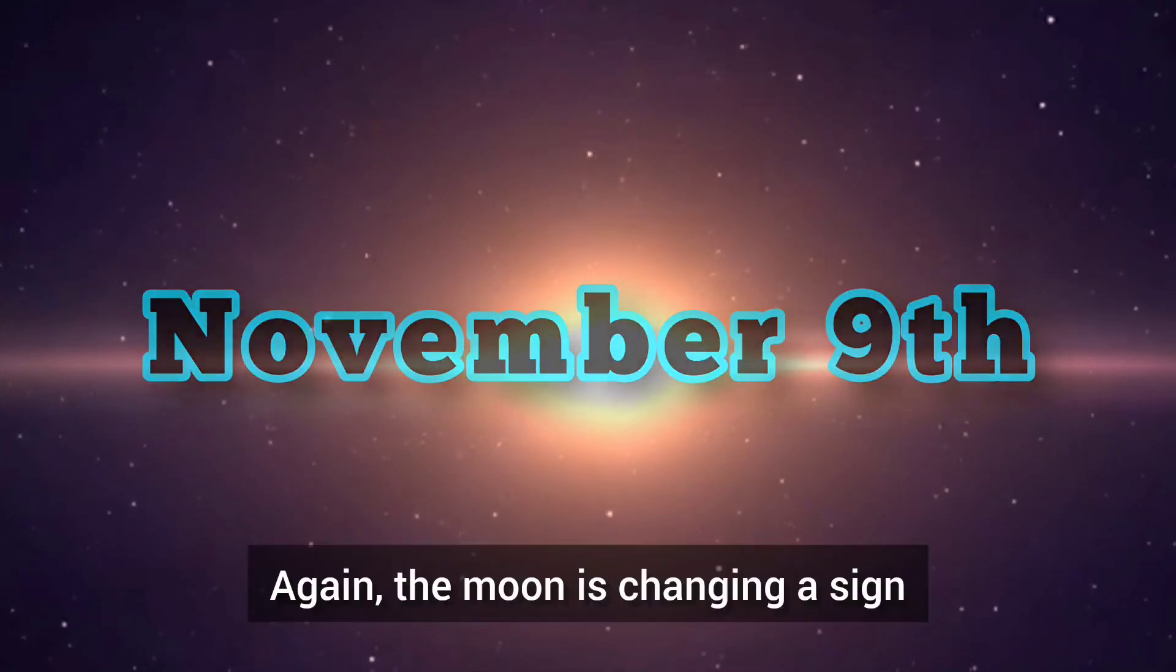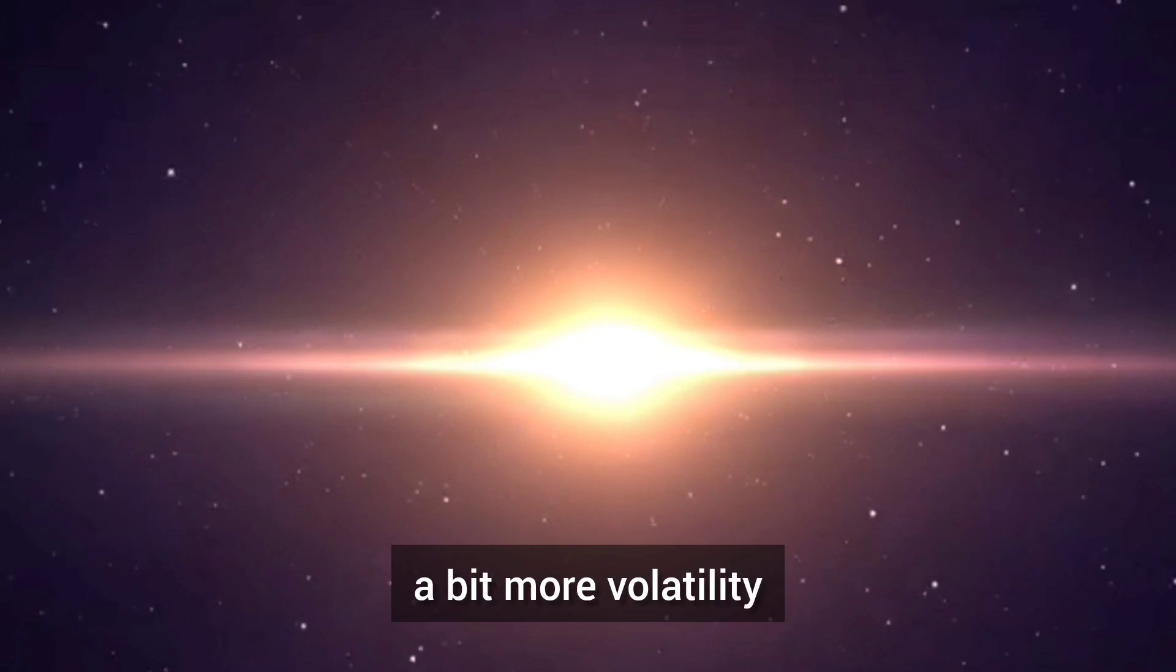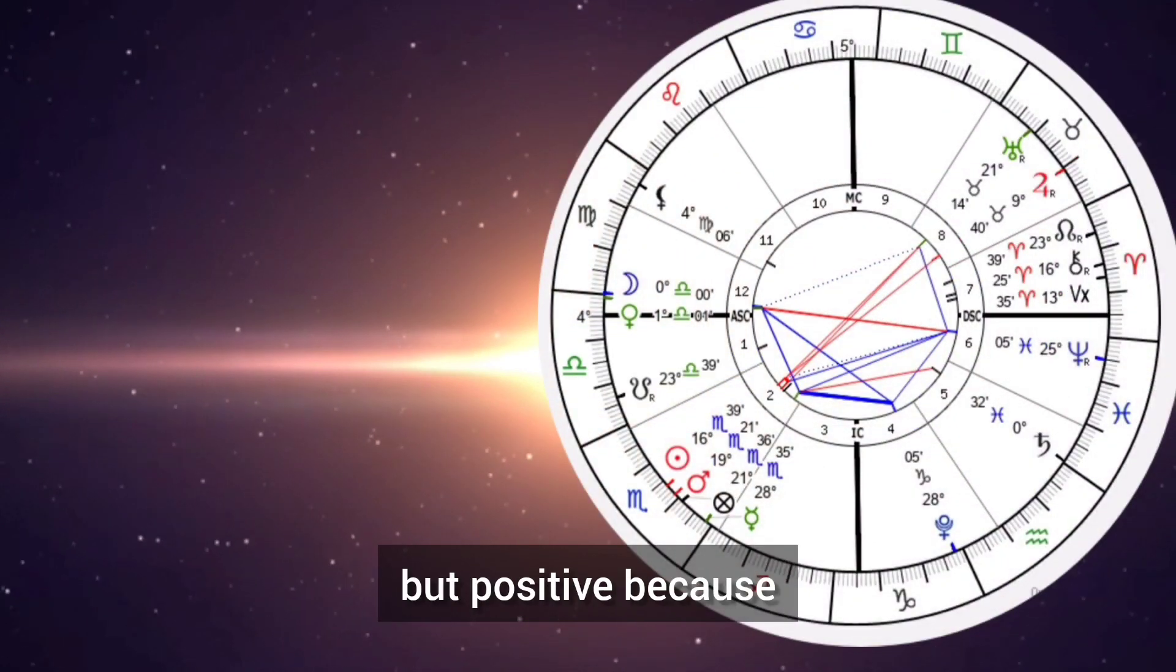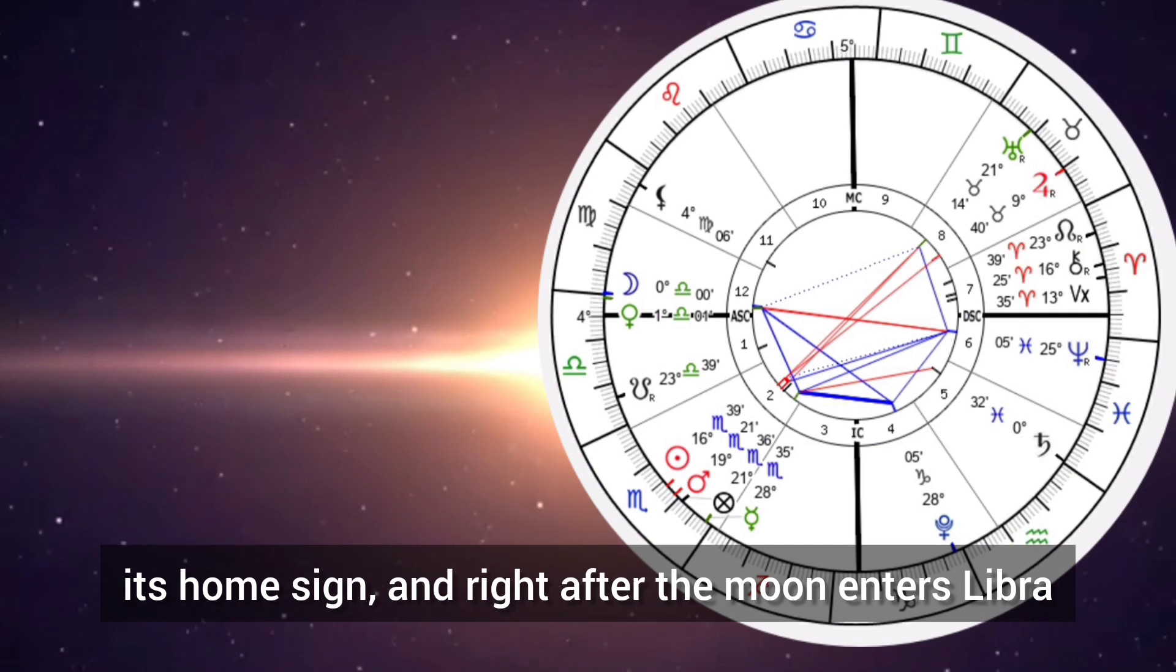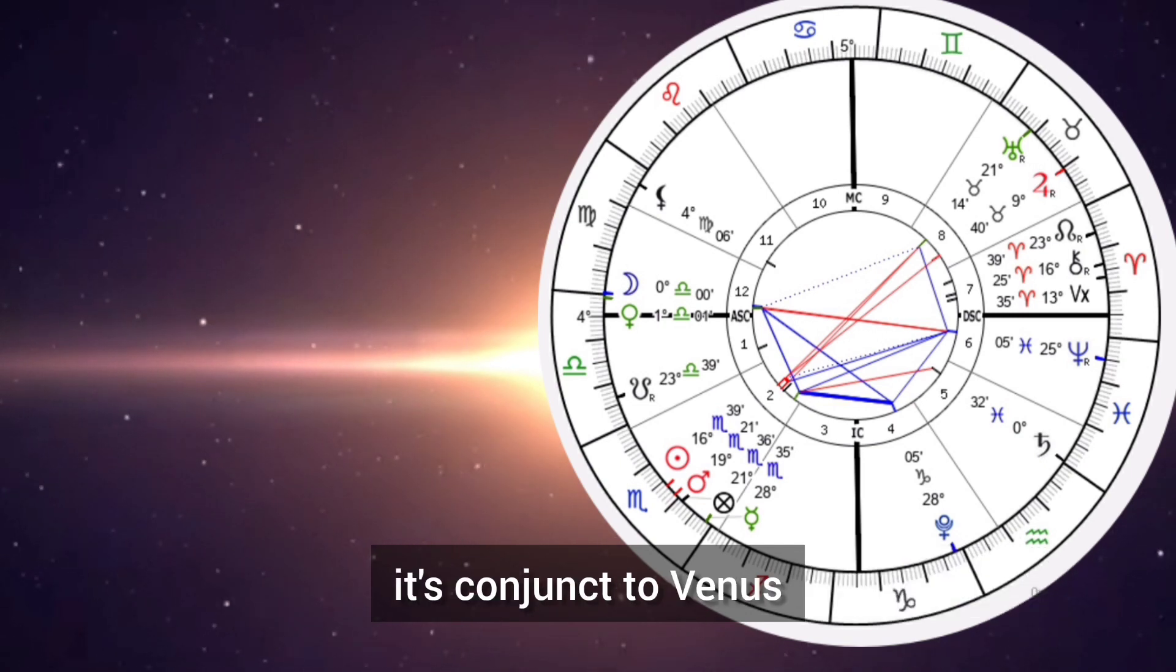November 9th, the moon enters Libra. Again, the moon is changing a sign. A bit more volatility but positive because Venus is in Libra, its home sign. And right after the moon enters Libra, it's conjunct to Venus.